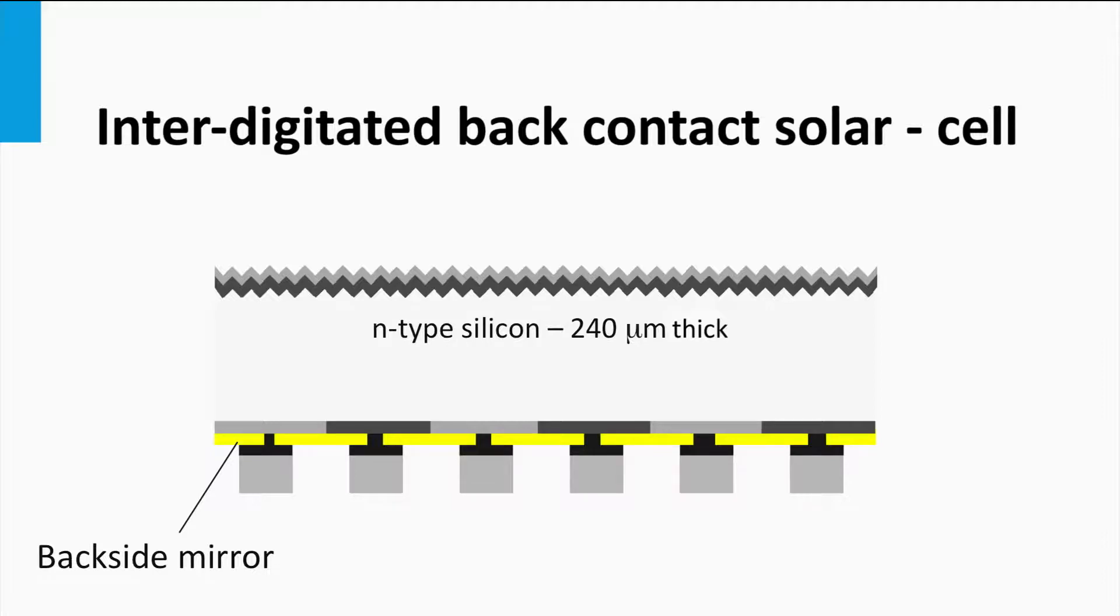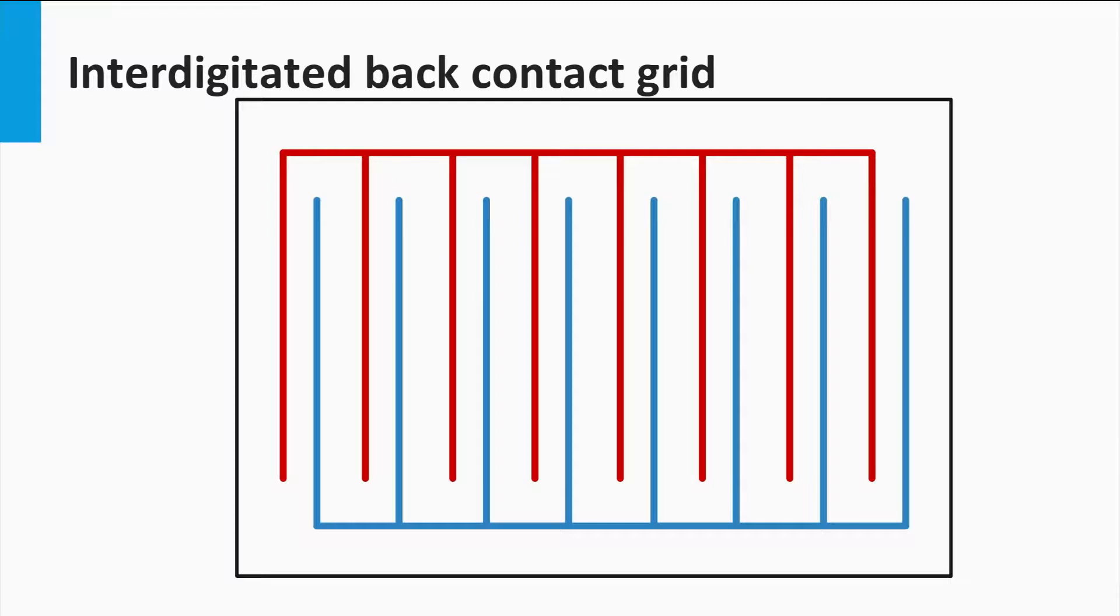It will reflect the light above 900 nm, which is not absorbed during the first pass, back into the absorber layer, enhancing the absorption path length. An interdigitated back contact solar cell would look like this.